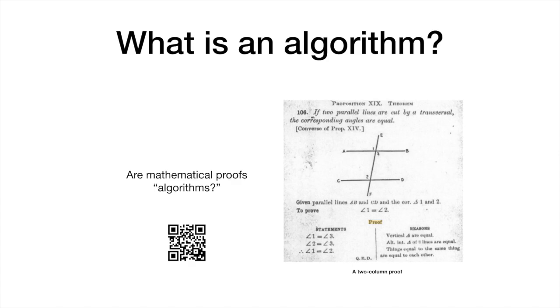An algorithm is a non-ambiguous specification of how to solve a class of problems. To be valid, an algorithm must require a finite amount of time and a finite amount of memory.